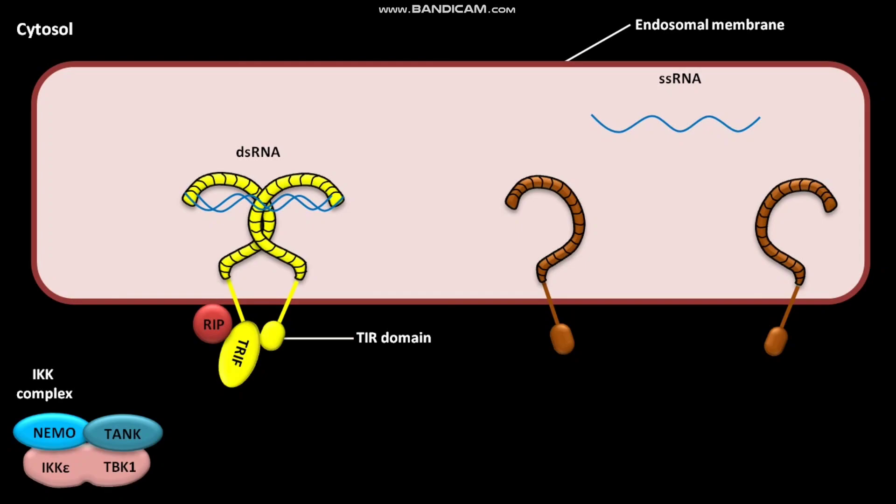TRIF then recruits inactive TRAF3 and activates it. Active TRAF3 then activates an IKK complex.